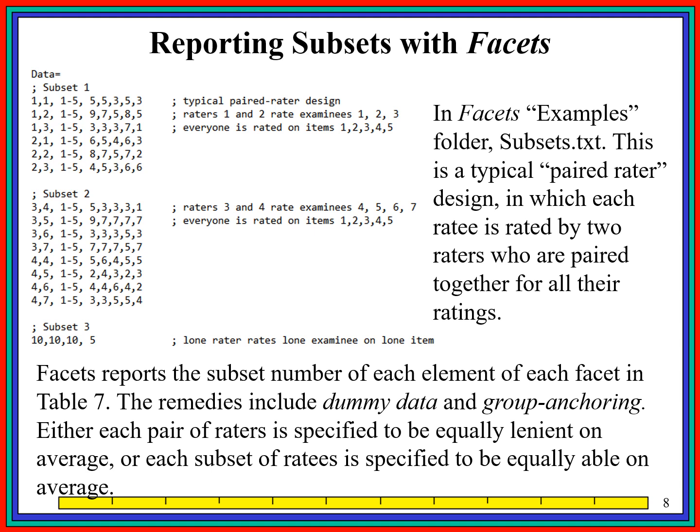There is an example in the FACETS examples folder called subsets.txt, set up with a standard FACETS data file. We have raters, examinees, and items. Everybody takes the same items, but there are two subsets: raters 1 and 2 rate examinees 1, 2, and 3, while raters 3 and 4 rate examinees 4, 5, 6, and 7. The two sets of data cannot be directly compared.